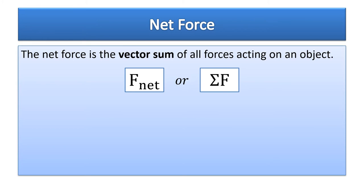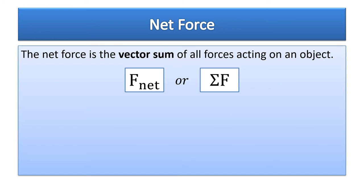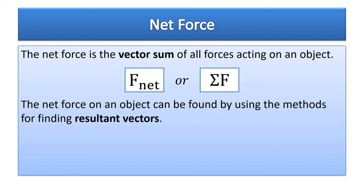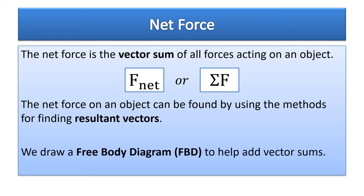You could write F sub net, or sometimes sigma F. Sigma in math means sum, and this is the vector sum — you're adding all the forces together, remembering that they're vectors, so direction matters. The net force on an object can be found using the methods for finding resultant vectors. We draw a free body diagram, or FBD, to help add vector sums. We've been doing this since unit one with vector diagrams, but now we're analyzing forces.